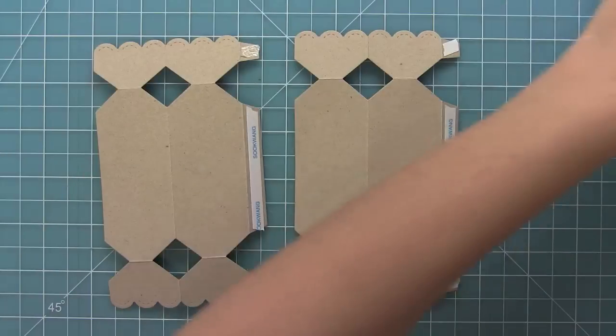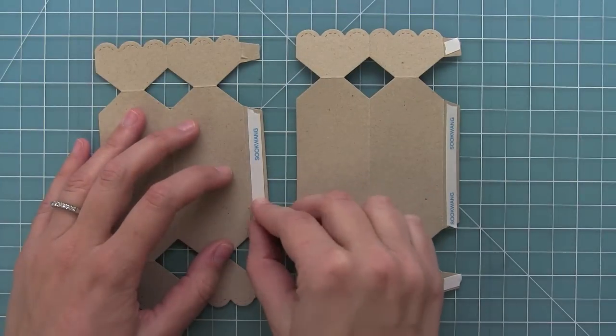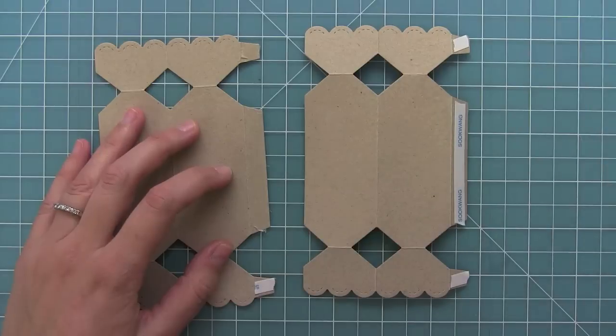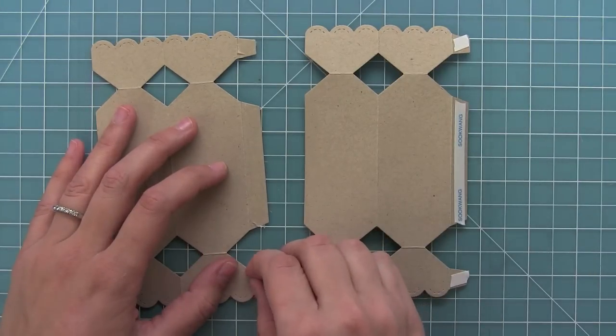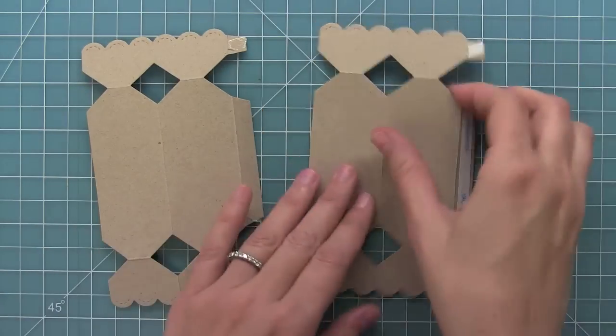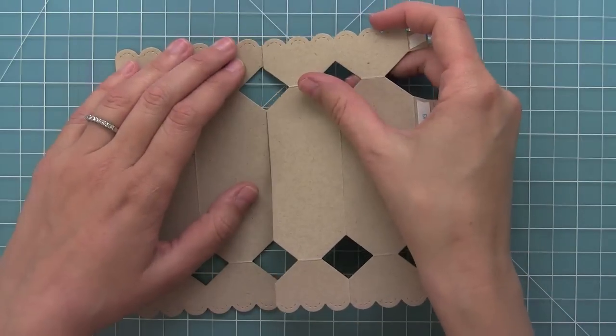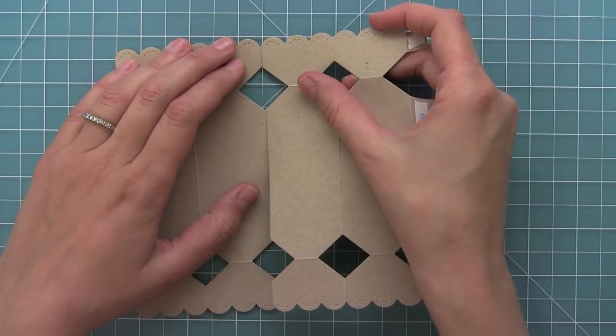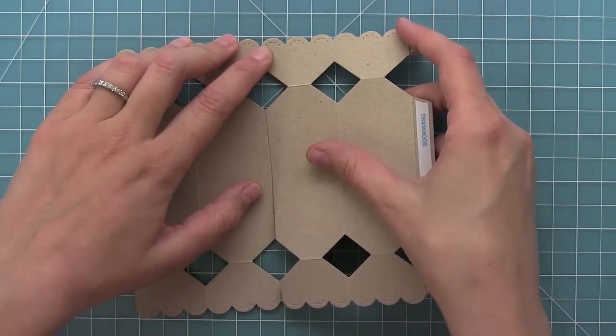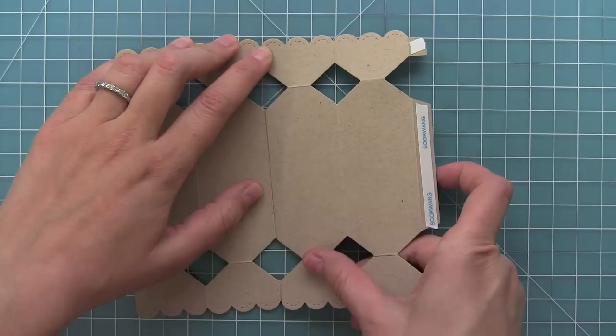Then you can peel the backing off to expose the adhesive, and you're going to adhere these two pieces together. It's actually really easy to do. You can either line up the tops of the two die cut pieces, or you can look at those diamonds there and make sure you're forming an even diamond, and it'll help you line it up every single time.